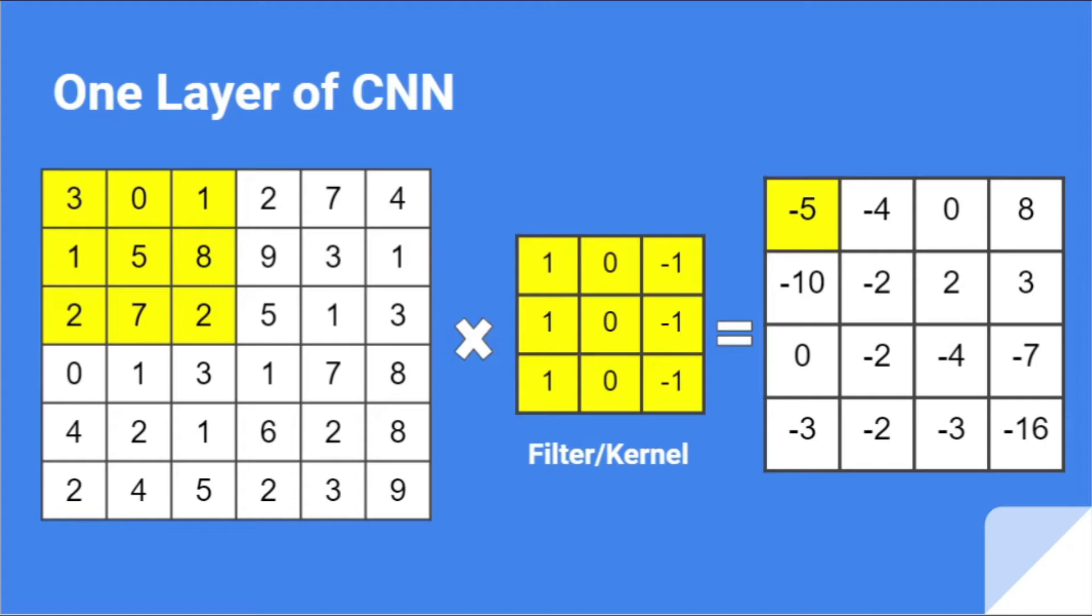Can you guess what's happening here by pausing the video? What's really happening here is we multiply the corresponding cells and add all the products. So here you can see that 3 into 1 plus 0 into 0 plus minus 1 into 1 plus 1 into 1 plus 5 into 0 plus minus 1 into 8 plus 2 into 1 plus 0 into 7 plus minus 1 into 2 would be giving us minus 5. Then we do something like we move on to the next 3 by 3 section from the input and do the same operation and then we get minus 4.